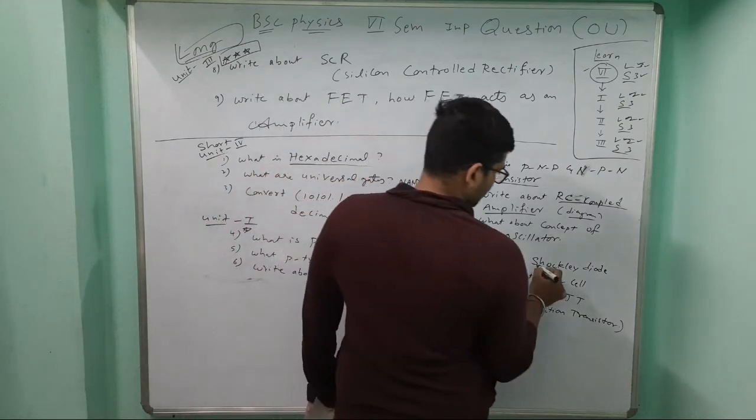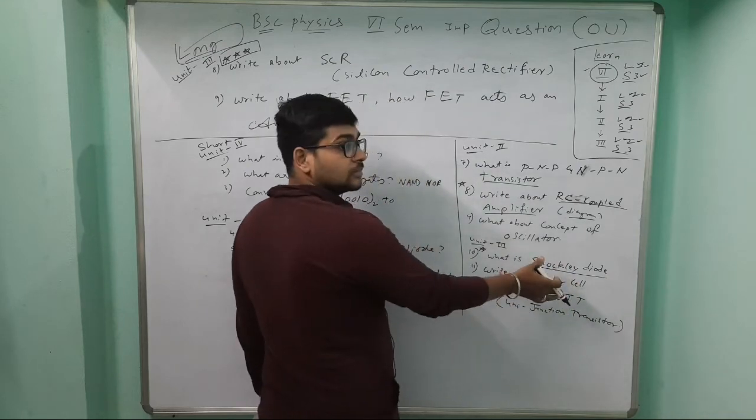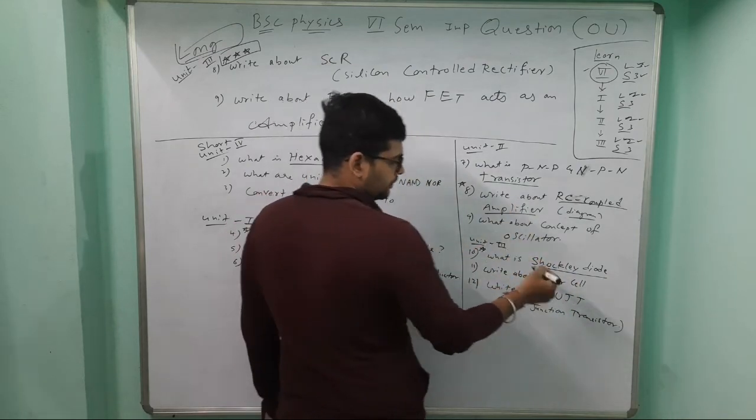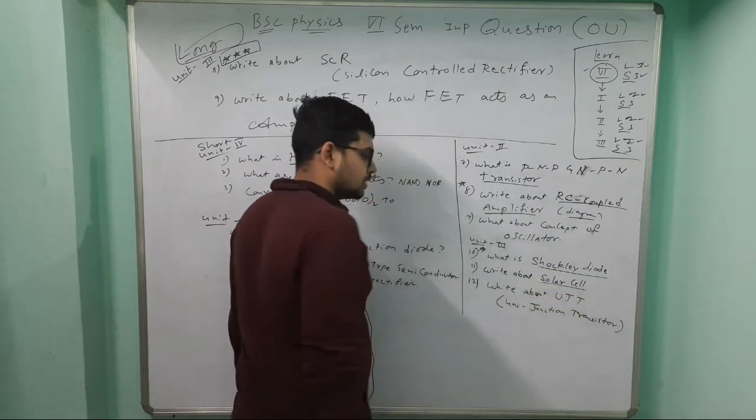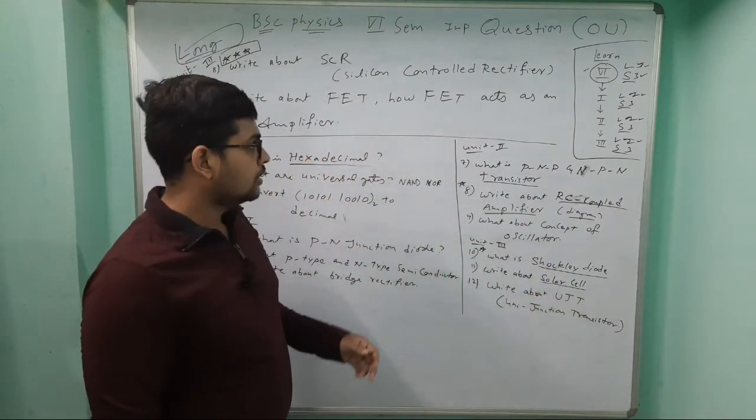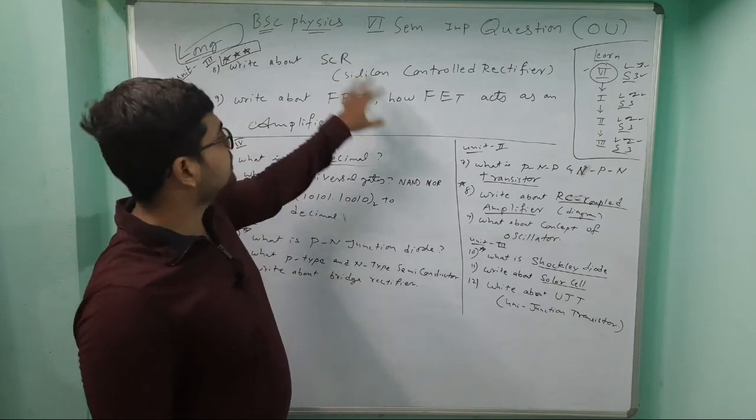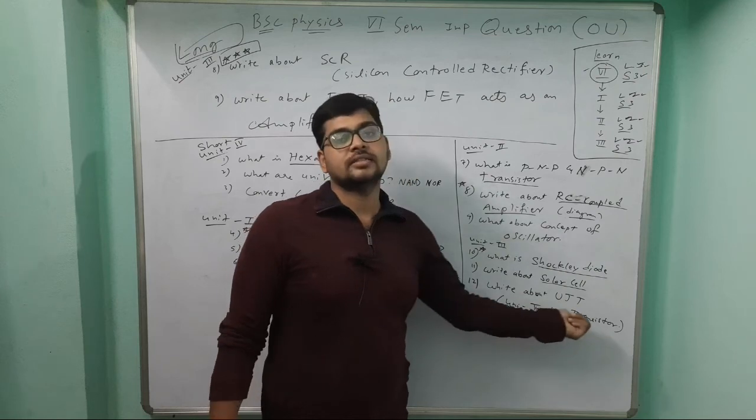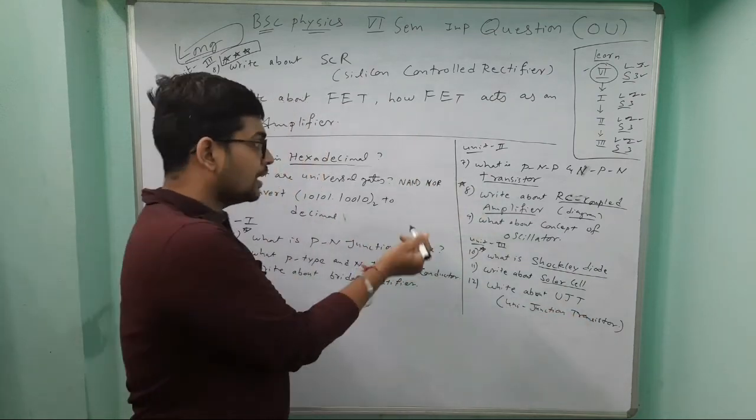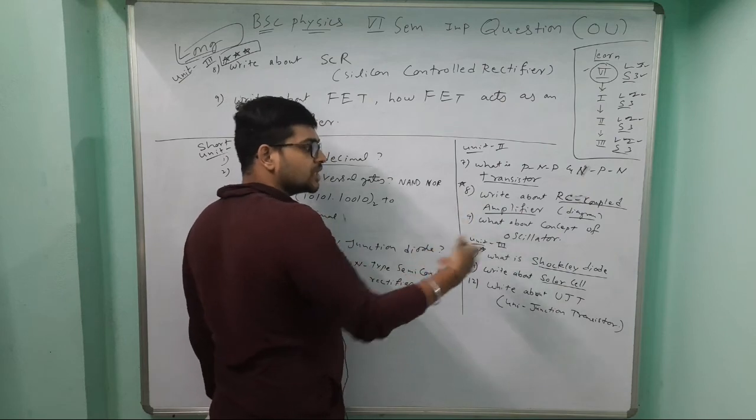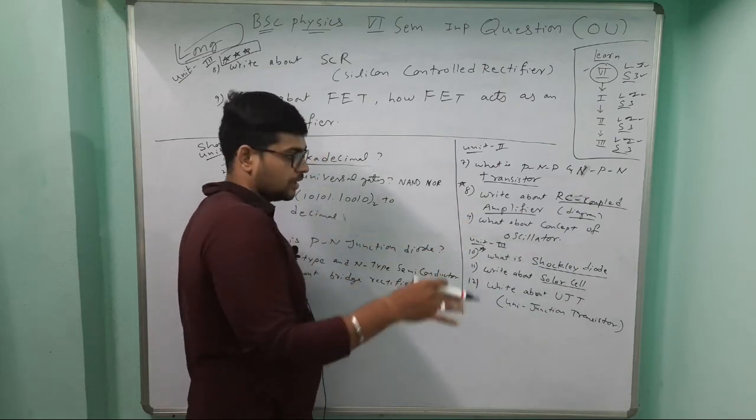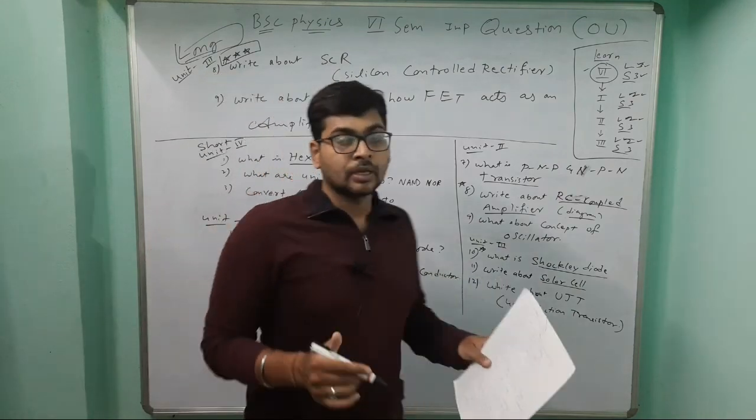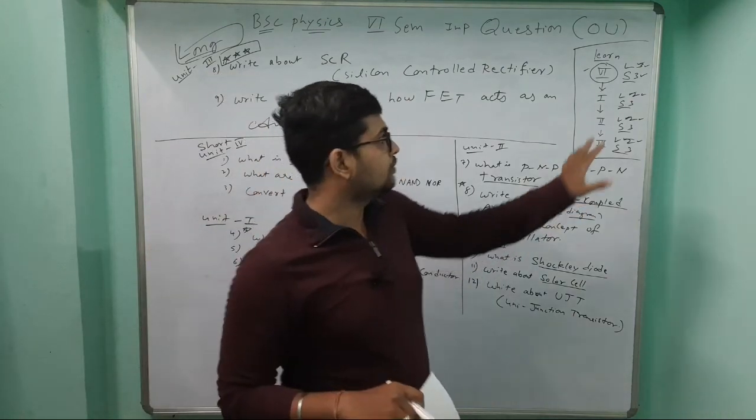Unit 3 short answer questions: What is chopper? Important - diagram is important and you have to write how it functions. Next, solar cell. Last question: write about UJT - Uni Junction Transistor. Important question, I'm giving star mark because more chances this will definitely come.